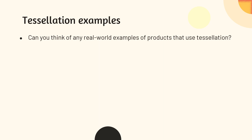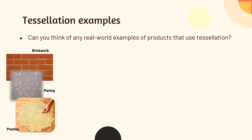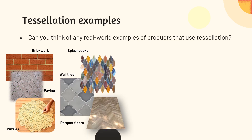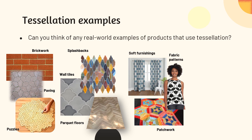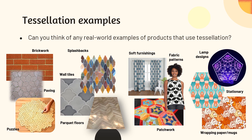Let's think less abstract. Can we think of real-world examples of products that use tessellation? How about things like brickwork and paving, puzzles, splashbacks and wall tiles, parquet floor, and fabrics — we see an awful lot of fabric patterns in soft furnishing and patchwork. And even projects you could do at school, like creating a beautiful design and turning it into stationery, wrapping paper, mugs, or even something like a fractal lap design.